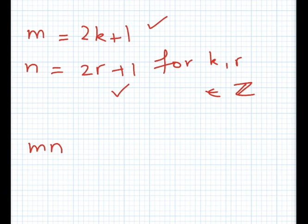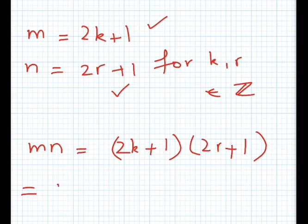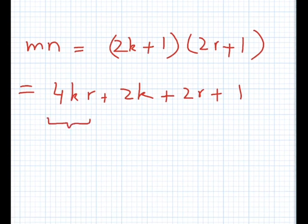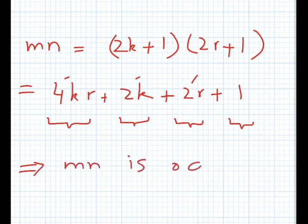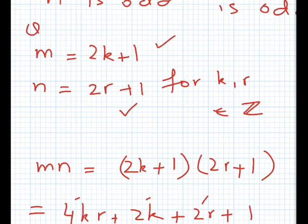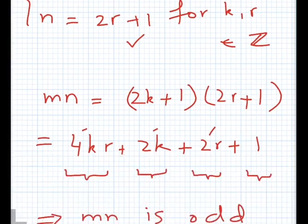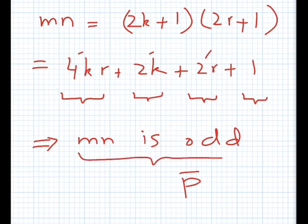This means that m is odd and n is odd, so we have assumed Q bar. Now m times n is 2k plus 1 times 2r plus 1, which is equal to 4kr plus 2k plus 2r plus 1. Note that this is a multiple of 4, this is a multiple of 2, this is also a multiple of 2, but this one is odd. So a sum of even, even, even, and odd is always odd. This means that m times n is odd.